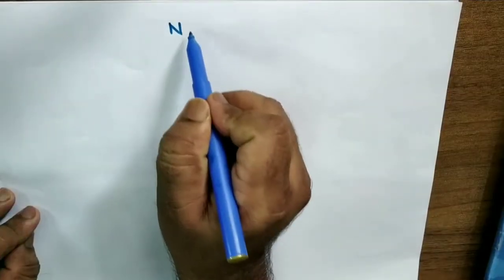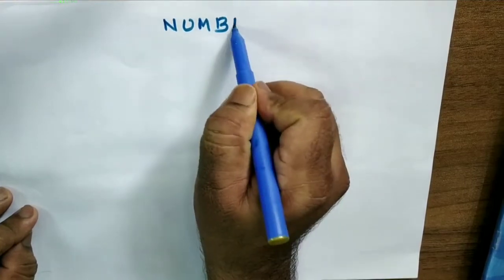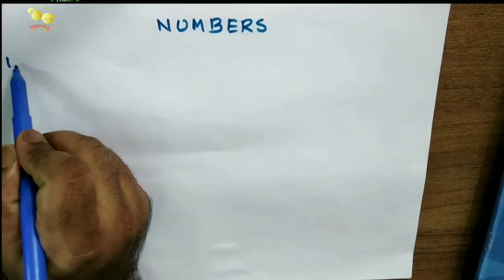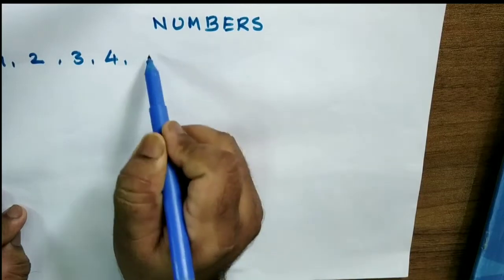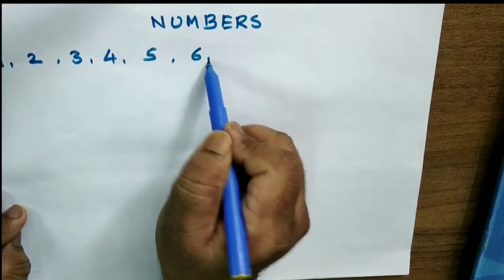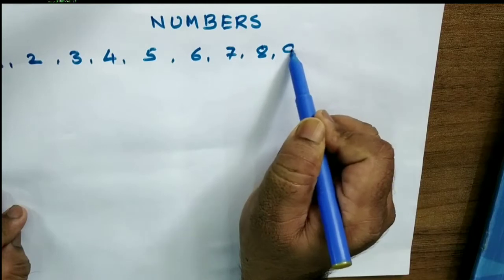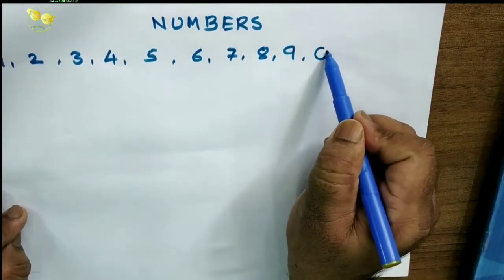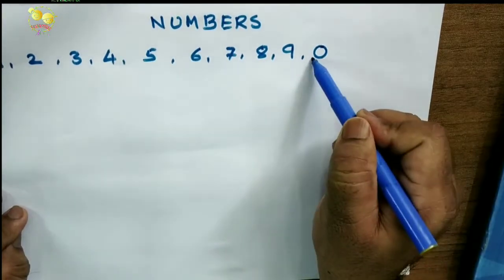Numbers. Okay, numbers. Numbers is 1, 2, 3, 4, 5, 6, 7, 8, 9, and 0. Okay, so we'll start from here.